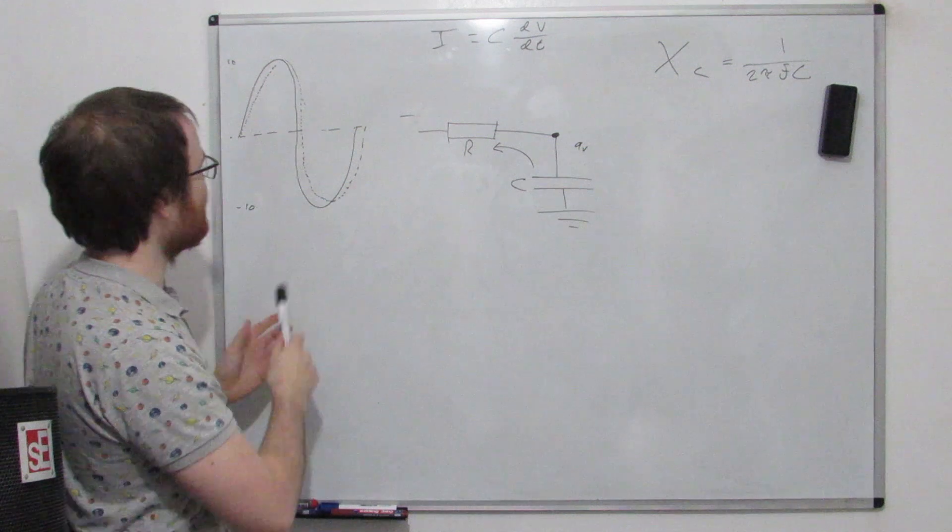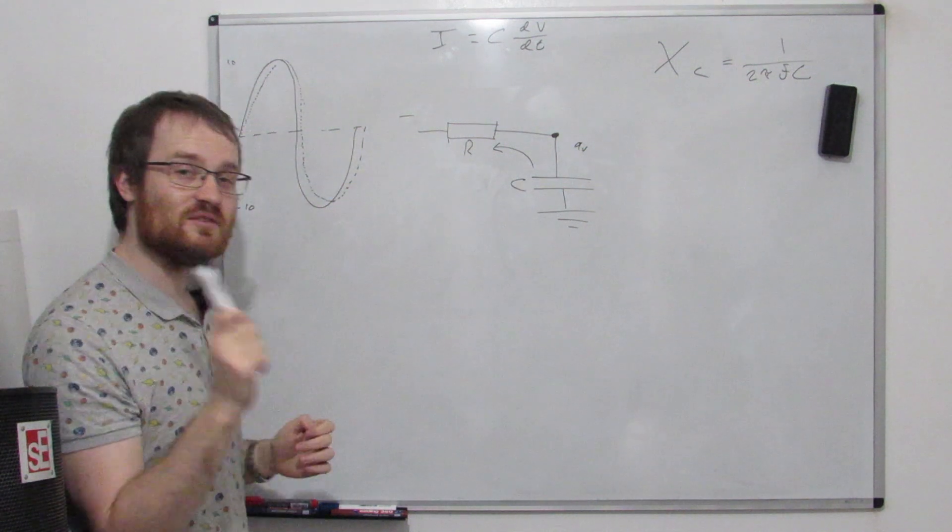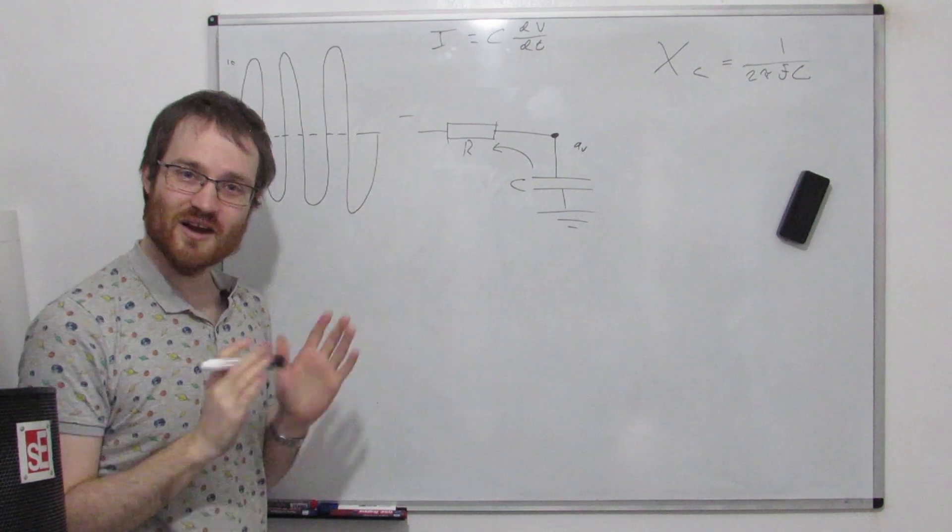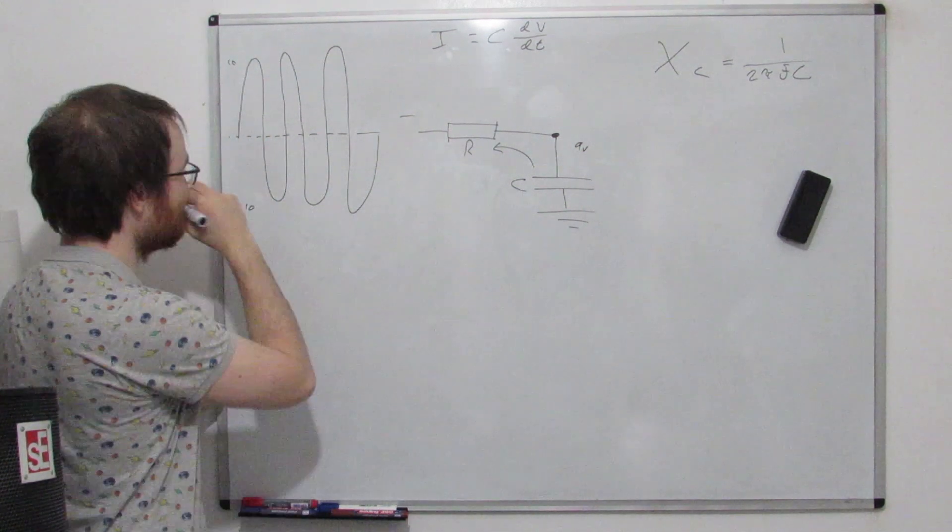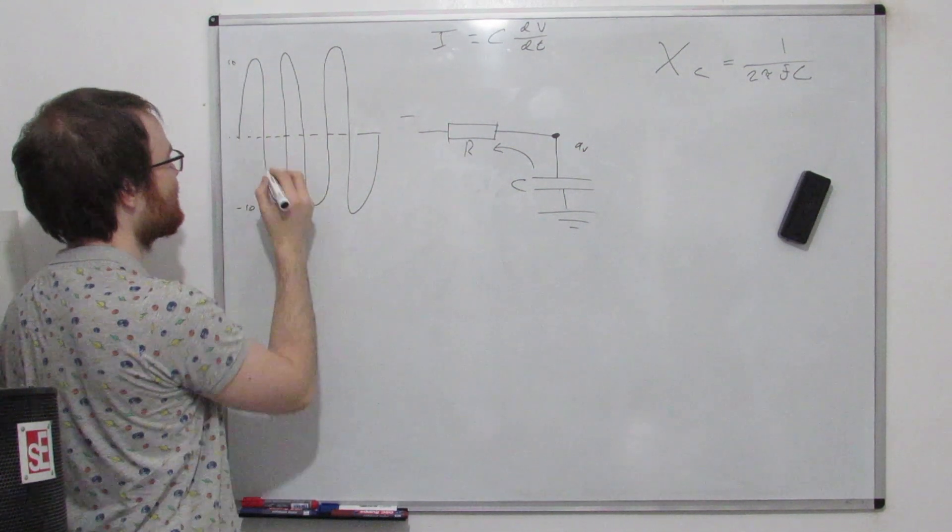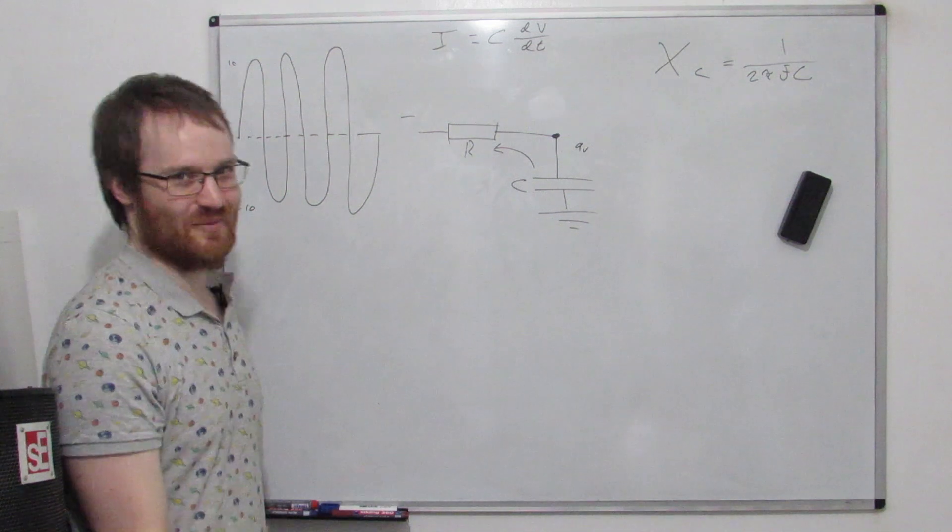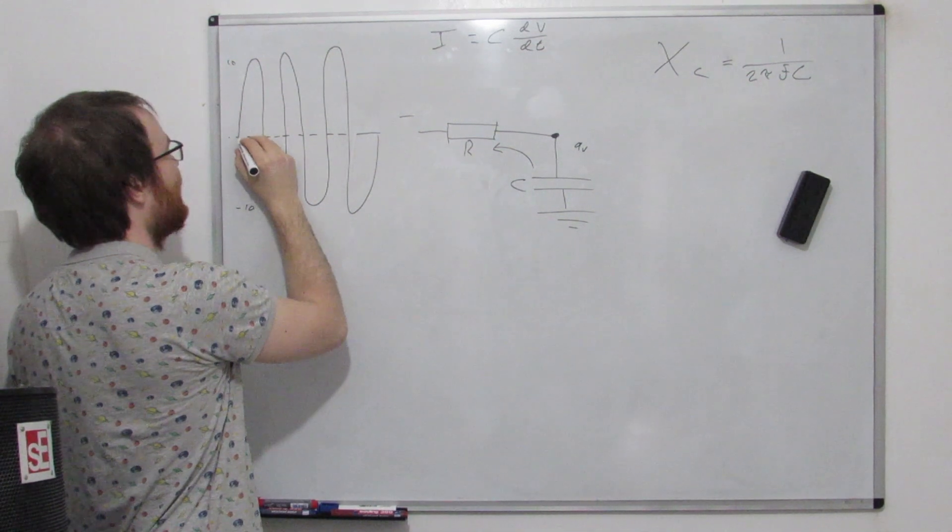So what happens if we then speed this frequency up so it's much faster than the RC? Again, you'll have to forgive my terrible drawing, but what's going to happen now is that the capacitor is nowhere near being able to keep up with this. But it's going to try, it's going to do its best.